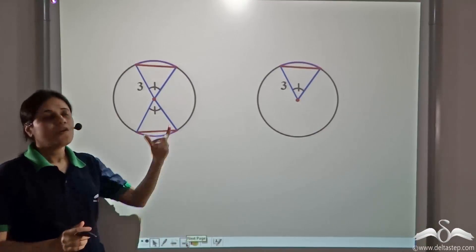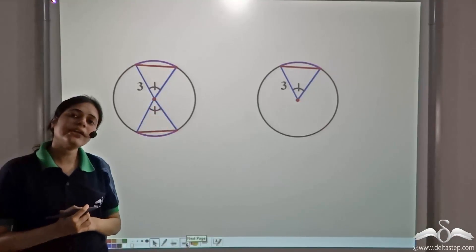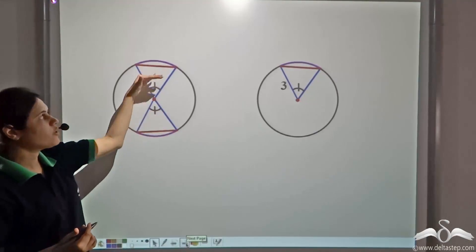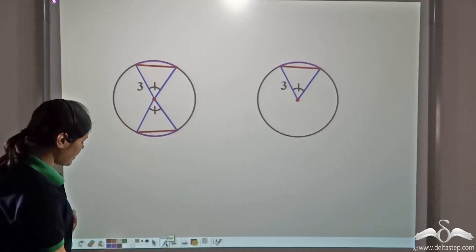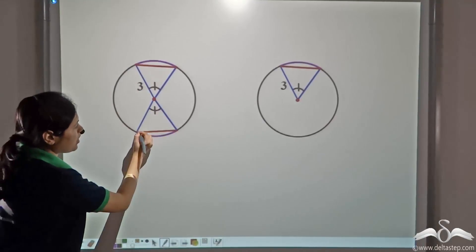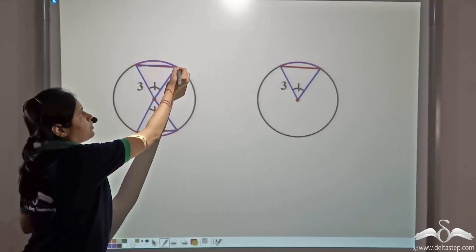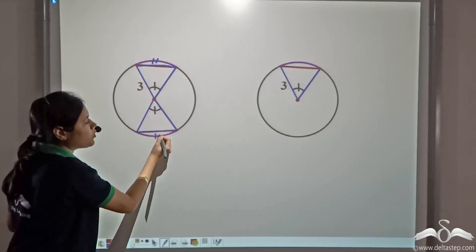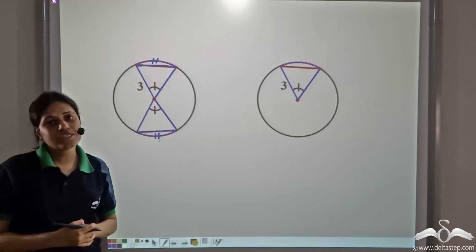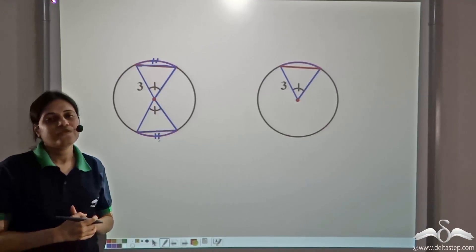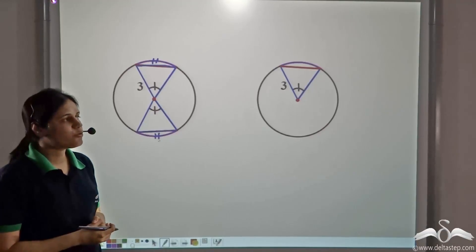Now, if we have congruent arcs, what can we say about the corresponding chords? Can we say that these chords are equal? Yes, we can. Let us prove it.